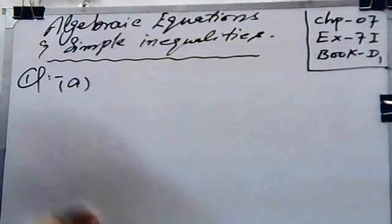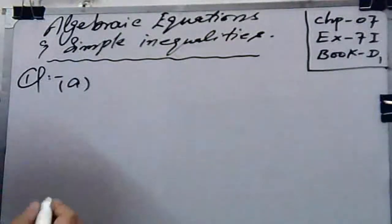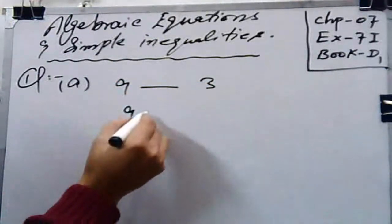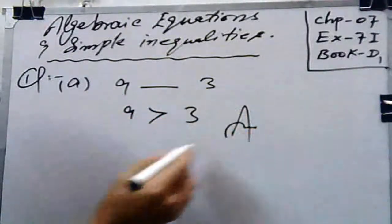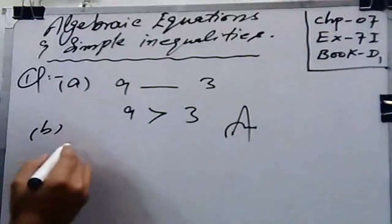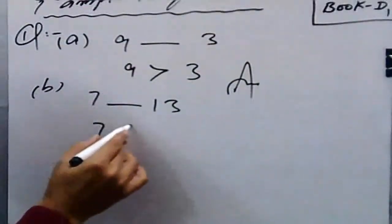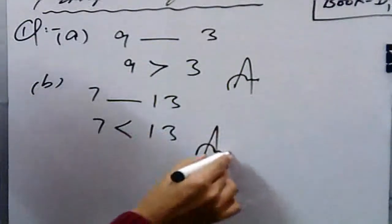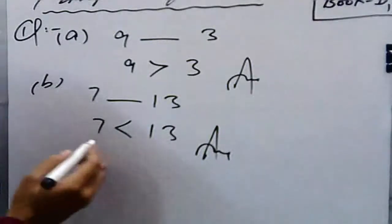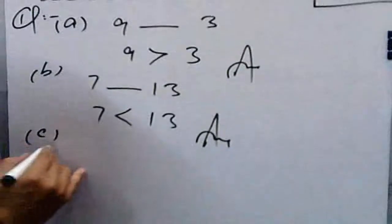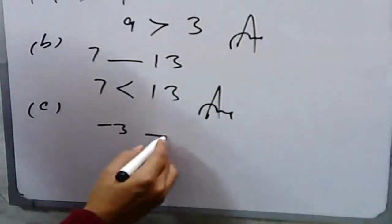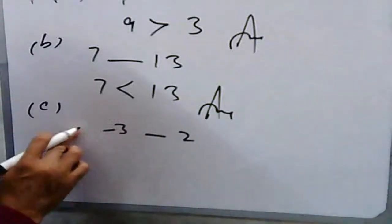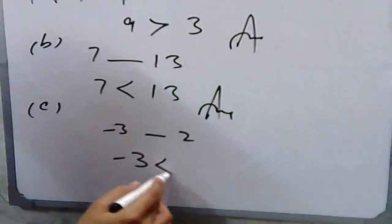In part a: 9 dash 3 — nine is greater, so nine is greater than three. In part b: 7 dash 13 — seven is less than thirteen. In part c: minus 3 dash 2 — a negative quantity is always less, so minus three is always less than two.